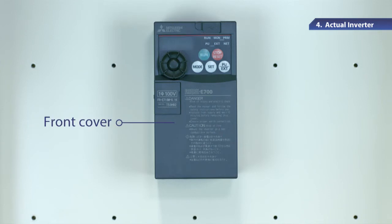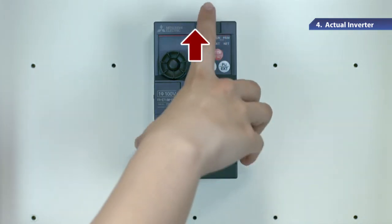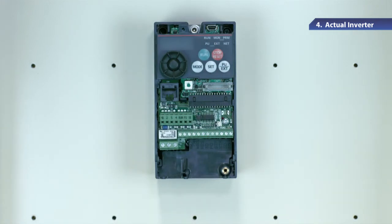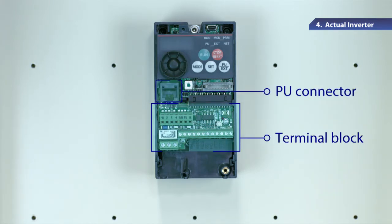To remove the cover, hold and pull it toward you as indicated with an arrow. After the front cover is removed, you can see the terminal block and the PU connector for connecting external equipment.